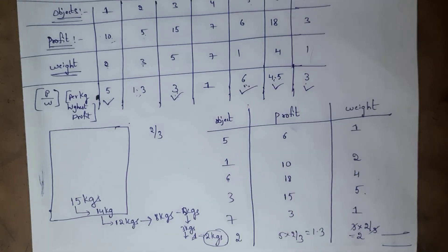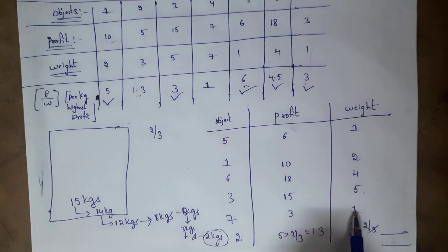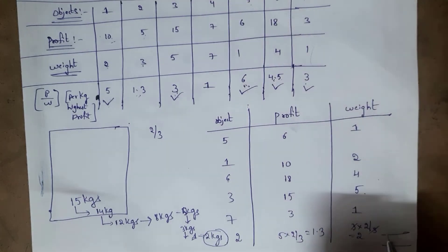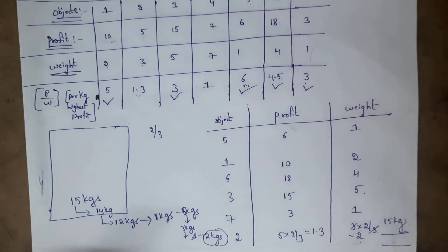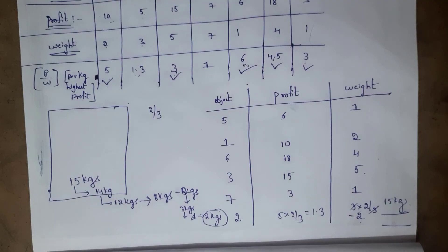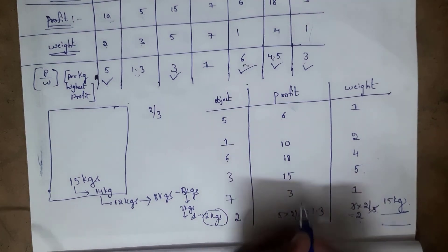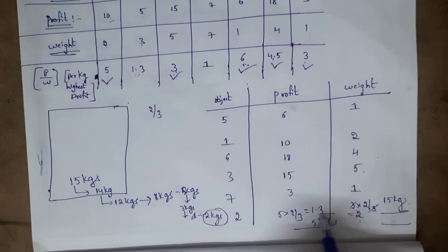Now let's verify the total weight: 2 + 1 = 3, 3 + 4 = 7, 7 + 5 = 12, 12 + 1 = 13, 13 + 2 = 15. Total weight is 15 kg. Total profit: 10 + 6 = 16, 16 + 18 = 34, 34 + 15 = 49, 49 + 3 = 52, 52 + 1.3 = 53.3. Total profit is 53.3. This is how we solve the fractional knapsack problem.